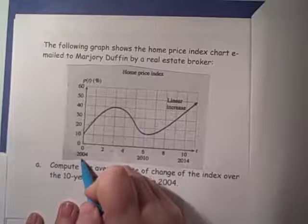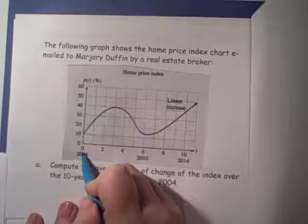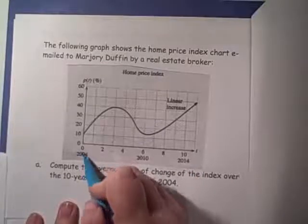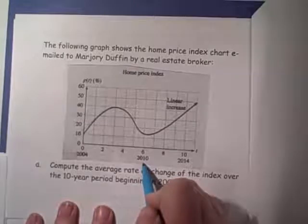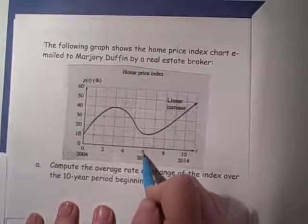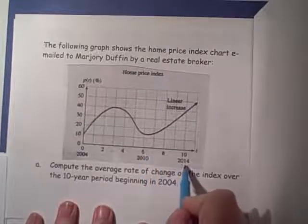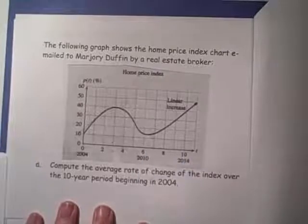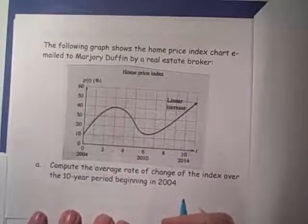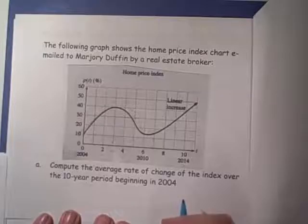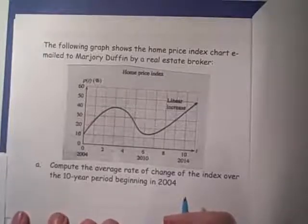Notice that 2004 correlates with year 0, 2010 is year 6, and 2014 is year 10. In part A, they ask us to compute the average rate of change of the index over the 10-year period beginning in 2004.